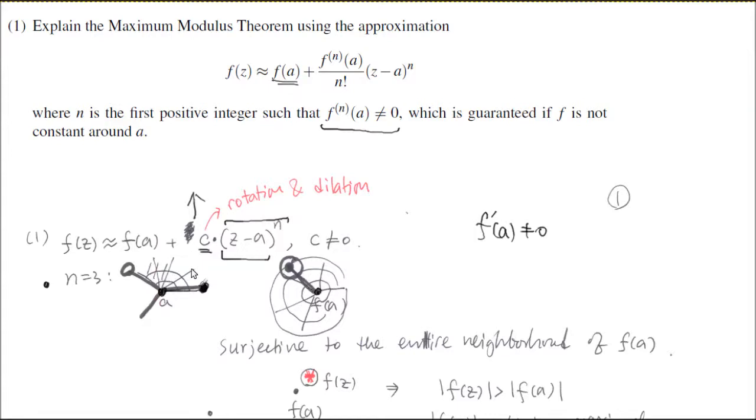So just dealing with it just this tiny bit in here, you will cover entire neighborhood around F of A. That's what this map is doing.